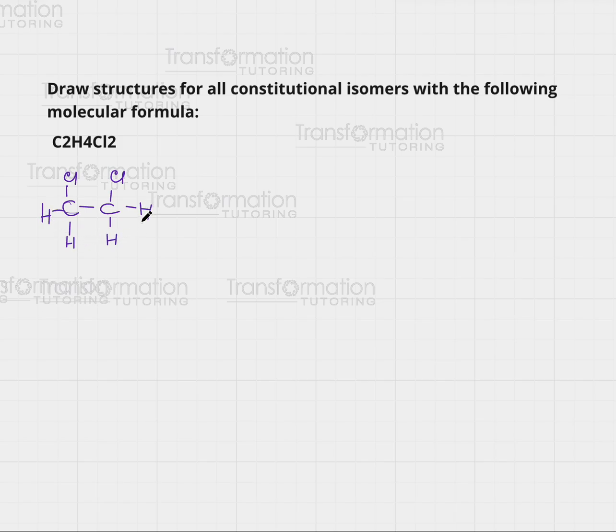Now what is another molecule that I can draw that still has this number of atoms of each kind but it's a different molecule? Again I can draw two carbons next to each other. This is a short chain I cannot really change it, it's just two carbons. So the only thing that I can change here is the location of my chlorines.